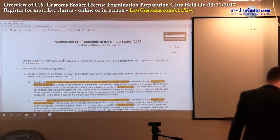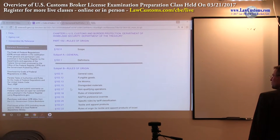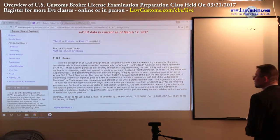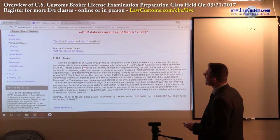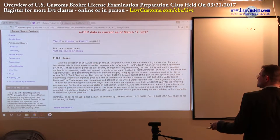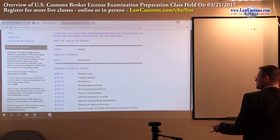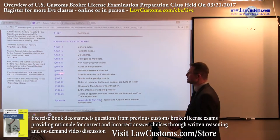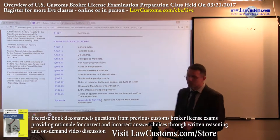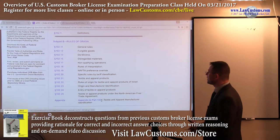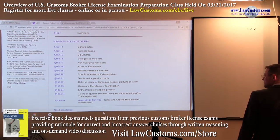The Part 102 provisions mostly deal with — if we look at the scope — sections 102 up to 102.21. After 102.21 you have the textiles rules of origin, and those are not applicable here. Most of what is relevant is located from 102.11 to 102.20, and primarily the 102.20 provisions, because those are the tariff shifting requirements for NAFTA.